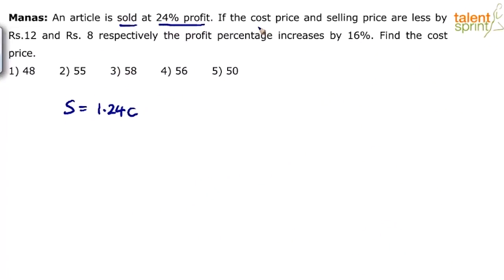Now if the cost price and selling price are less by rupees 12 and rupees 8 respectively, then the profit percentage increases by 16%. That means in the second case, profit percentage increases by 16%. Earlier the profit was 24%. Now the profit is 16% more. So 24 plus 16, 40%.